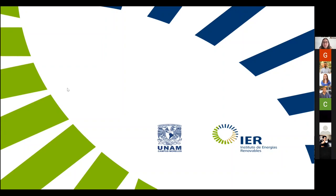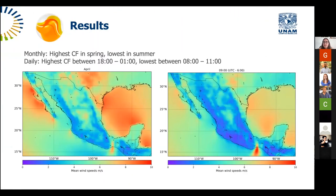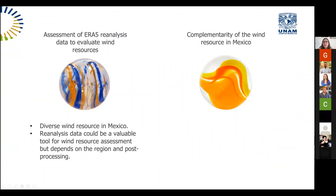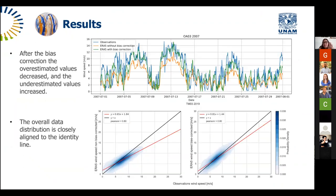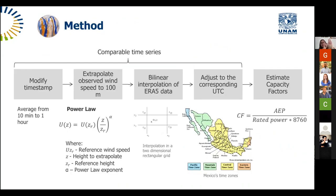I haven't heard about the cubic splines approach you mentioned, so it would be interesting to try. We used bilinear interpolation because the ERA5 data we download forms a rectangular domain where the base is defined by latitudes and longitudes and the z-axis is time. Since it is a rectangular mesh, we used interpolation on a two-dimensional rectangular grid.